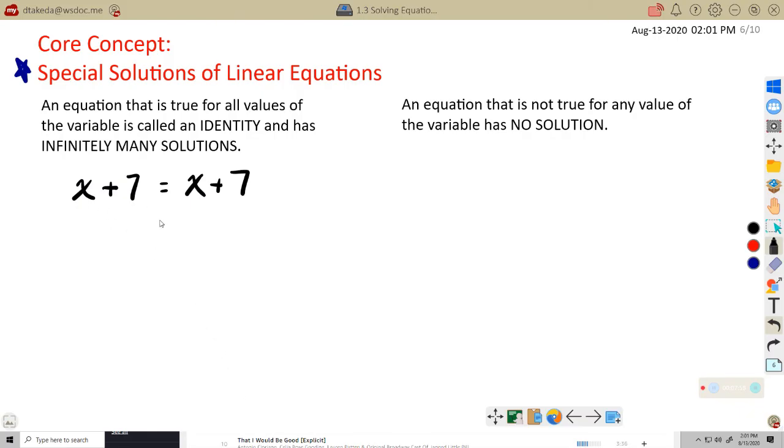Well, we know this to be true. But what does it mean x can be? It doesn't matter what x can be. x can be anything. Any number. Any real number, I should say. Because whatever it is, it's going to be the same on both sides. And 7 is going to be added to both sides. So we say that this has infinitely many solutions. And that's a phrase you need to kind of remember for these. And this type of equation is called an identity.